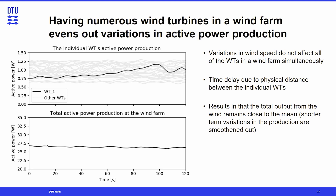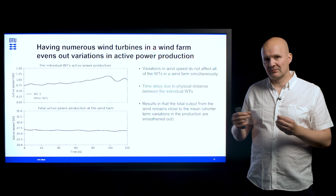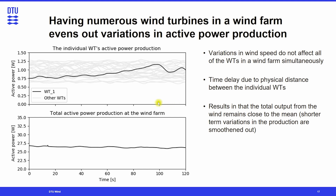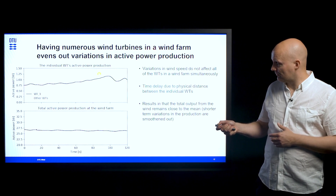The other system property that plays a role is the number of wind turbines in a wind farm. Variations in wind do not affect all of the wind turbines simultaneously — there will be some time delay because of the physical distance between them. Looking at the figure, you can see one wind turbine's output highlighted with the others in the background, and at any instance of time the average production follows a pretty straight line. This is the effect of having many wind turbines, which displaces the impact of the wind and results in a more even output than that of an individual wind turbine.